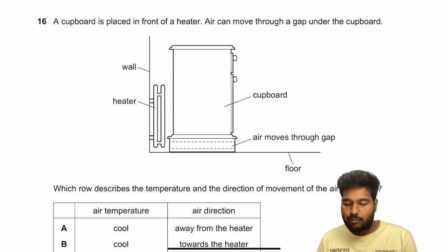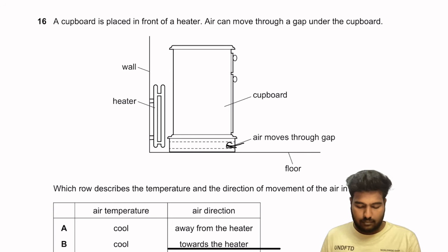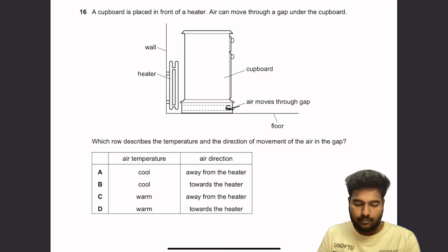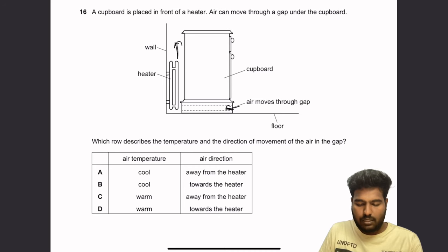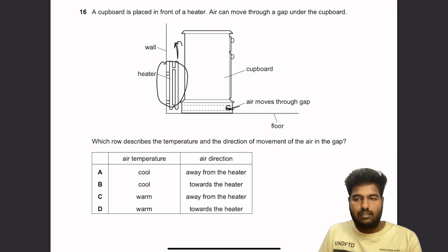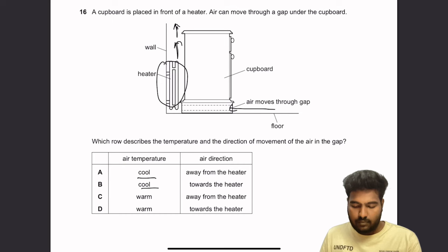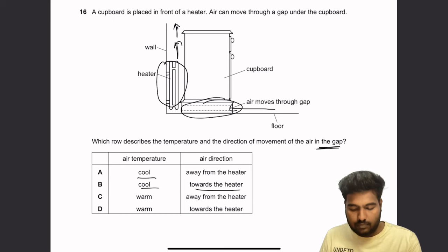Question 16: A cupboard is placed in front of a heater. Air can move through the gap under the cupboard. The air near the heater is heated, becomes less dense, and rises. This creates lower pressure behind the cupboard, drawing cold air through the gap towards the heater. So in the gap, the air temperature is cooler and the direction of movement is towards the heater. B is the right answer.